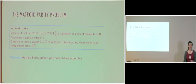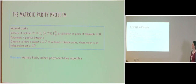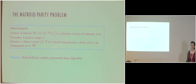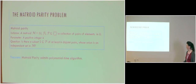We will use later the matroid parity problem: given a matroid M = (U, F) and a collection of pairs of elements P from the universe and a positive integer K, the question is whether there is a subset of at least K disjoint pairs from P whose union is an independent set in the matroid. It is known that matroid parity admits a polynomial time algorithm.